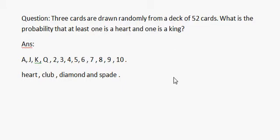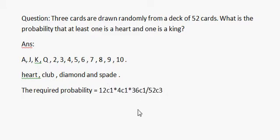The required probability is 12c1 × 4c1 × 36c1 / 52c3 plus 12c2 × 4c1 / 52c3.